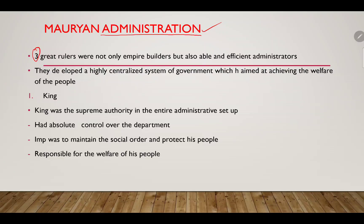There were three great rulers: Chandragupta Maurya, Bindusara, and Ashoka. These three great rulers were not only empire builders but also able and efficient administrators. The Mauryan Empire is famous not just for the big structures they built, but also for its highly centralized system of government which aimed at achieving the welfare of the people and uplifting socio-economic conditions.